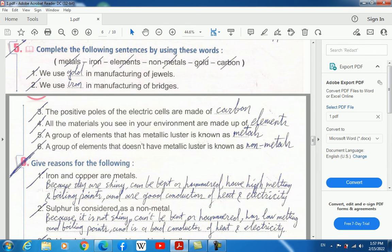Complete the following sentences by using these words: metals, iron, elements, non-metals, gold, carbon. One, we use gold in manufacturing of jewels. Two, we use iron in manufacturing of bridges.